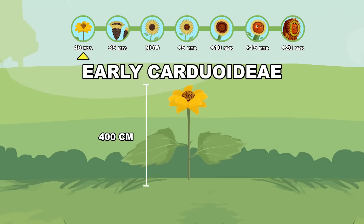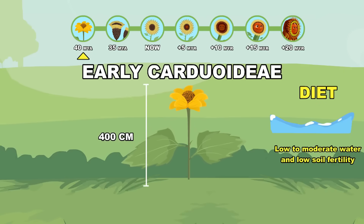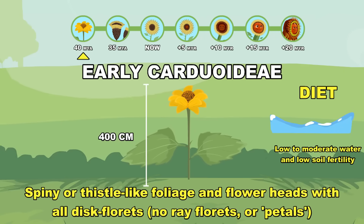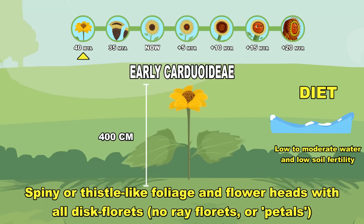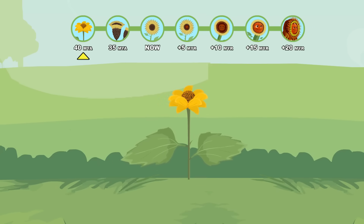Early Cardioideae. Spiny or thistle-like foliage and all disc florets. Cenozoic period.